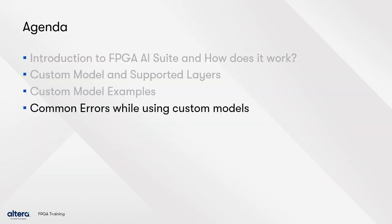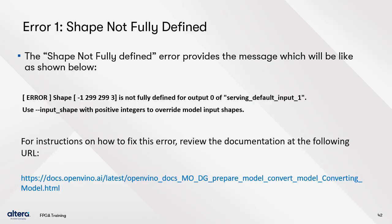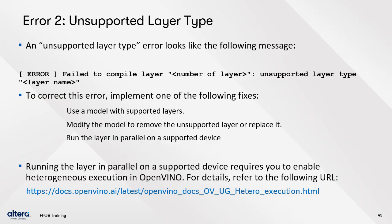We will now discuss common errors encountered while generating IR files for custom models. Error one is the 'shape not fully defined' error — use the input shape with positive integers to override model input shapes. Refer to the OpenVINO documentation and the Using Custom Models with FPGA AI Suite application note for details. For the unsupported layer type error, implement one of the following fixes: use a model with supported layers, modify the model to remove or replace the unsupported layer, or run the layer in parallel on a supported device by enabling heterogeneous execution in OpenVINO.